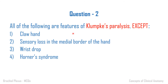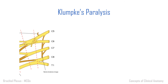Moving on to question two: all of the following are features of Klumpke's paralysis except — option one: claw hand; option two: sensory loss in the medial border of the hand; option three: wrist drop; option four: Horner's syndrome. Klumpke's paralysis is injury of the lower trunk — C8 and T1.